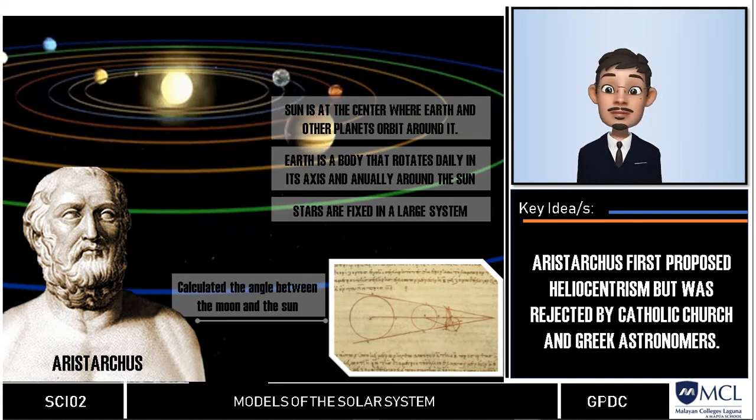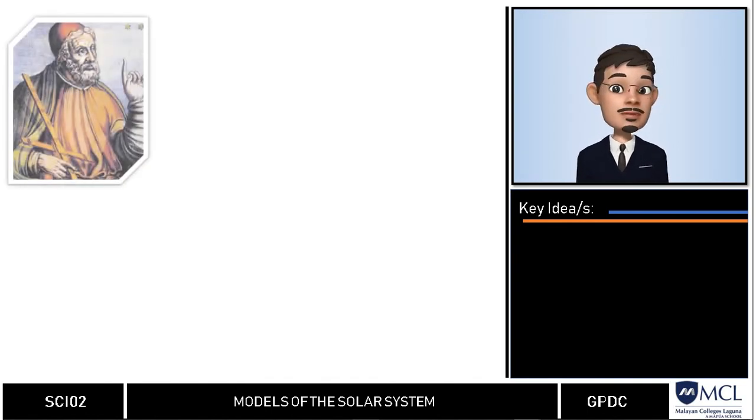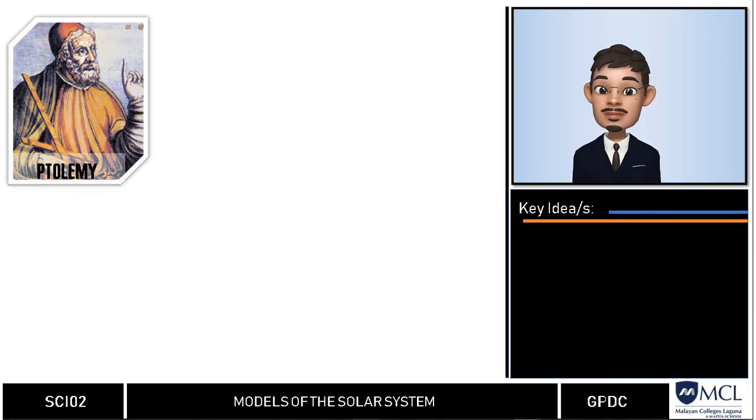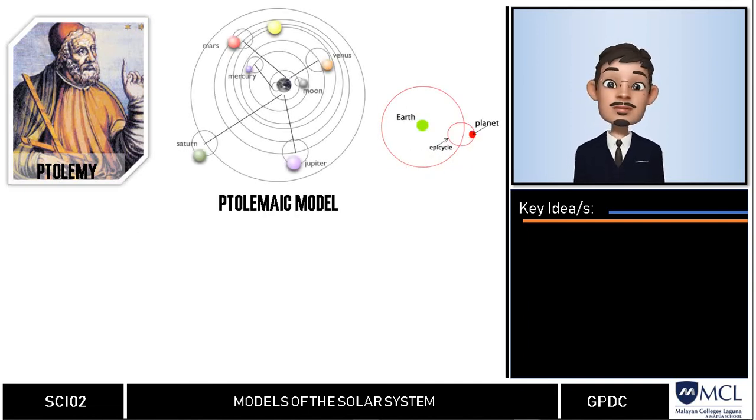Another notable name in ancient astronomy was the Roman Ptolemy who adapted Aristotle's geocentric theory of the universe. Ptolemy's idea is that the planets do not orbit in perfect circles around the earth. Instead, some planets like Mars appeared to move backward then move forward in large loops. He then proposed another model wherein the whole universe moved around the fixed stationary earth.